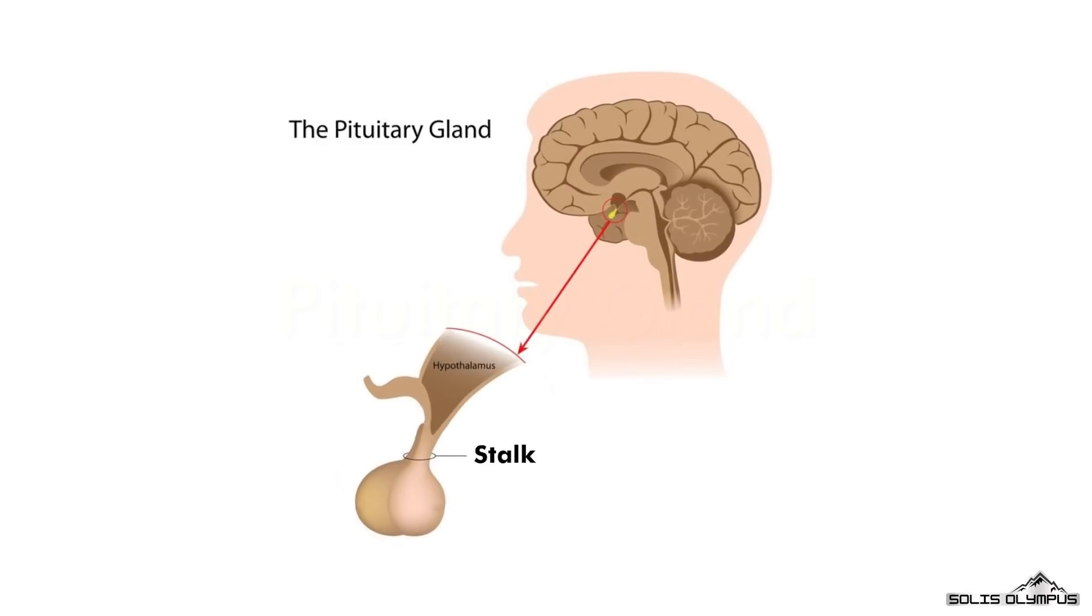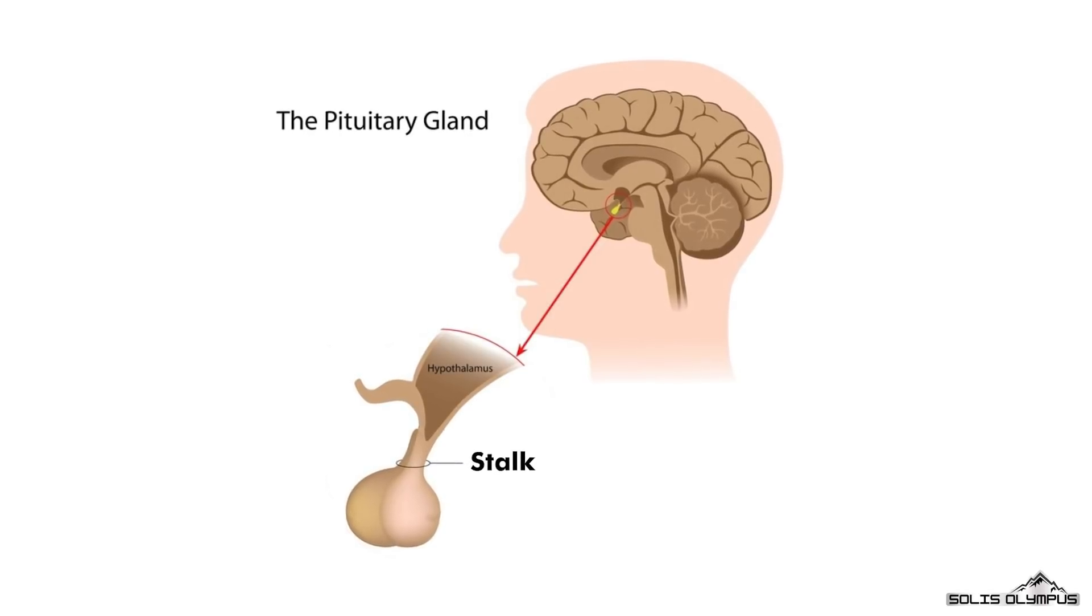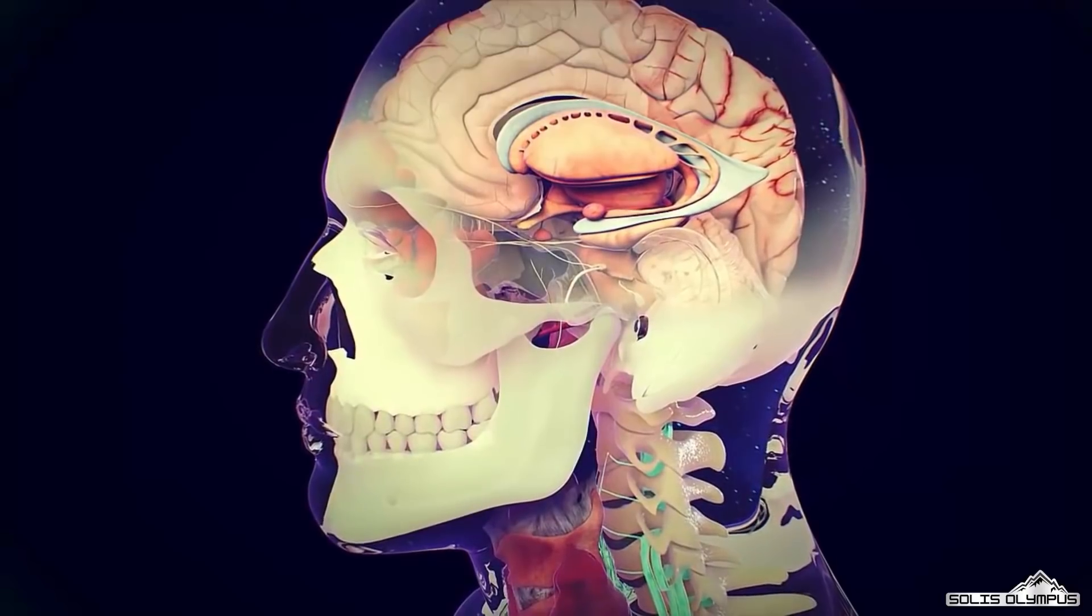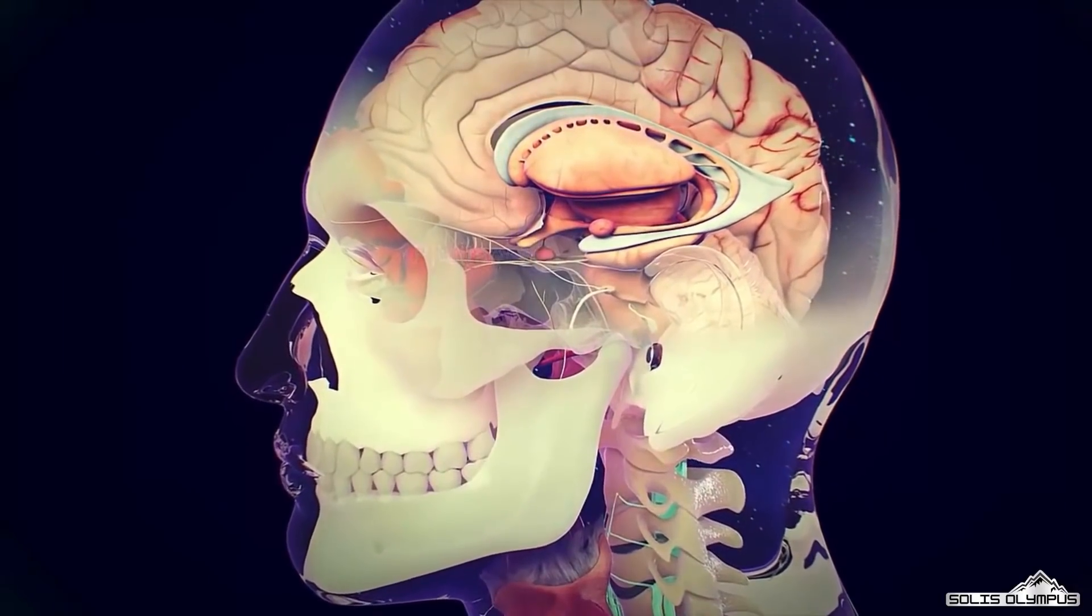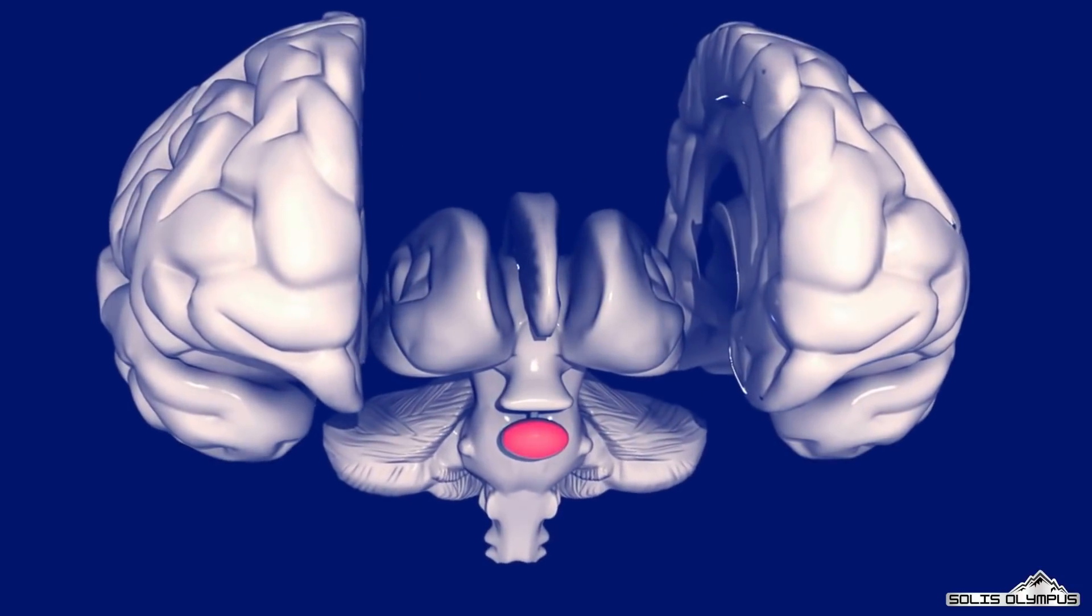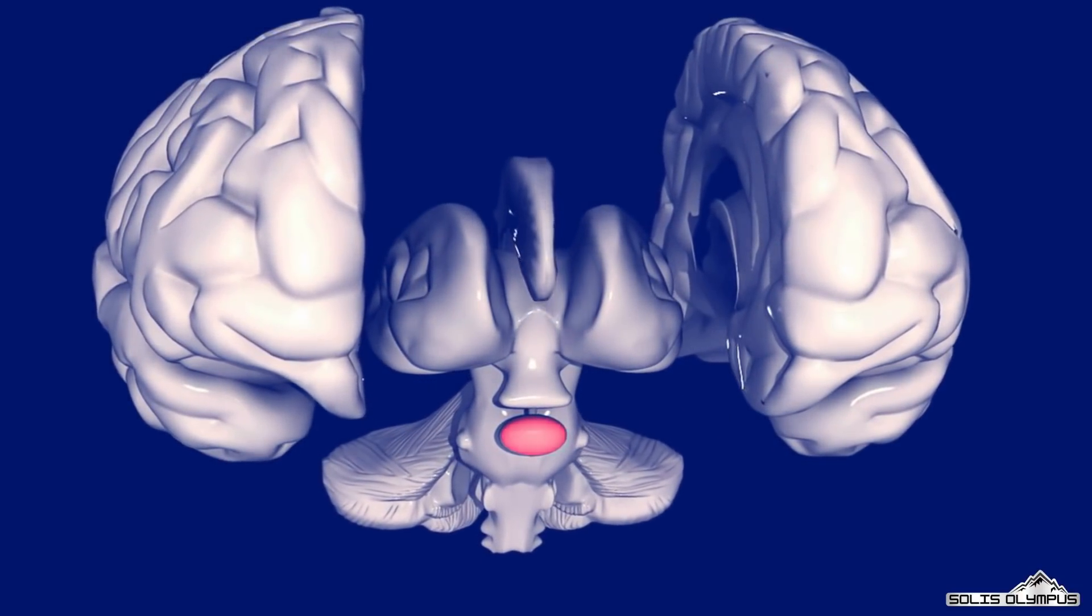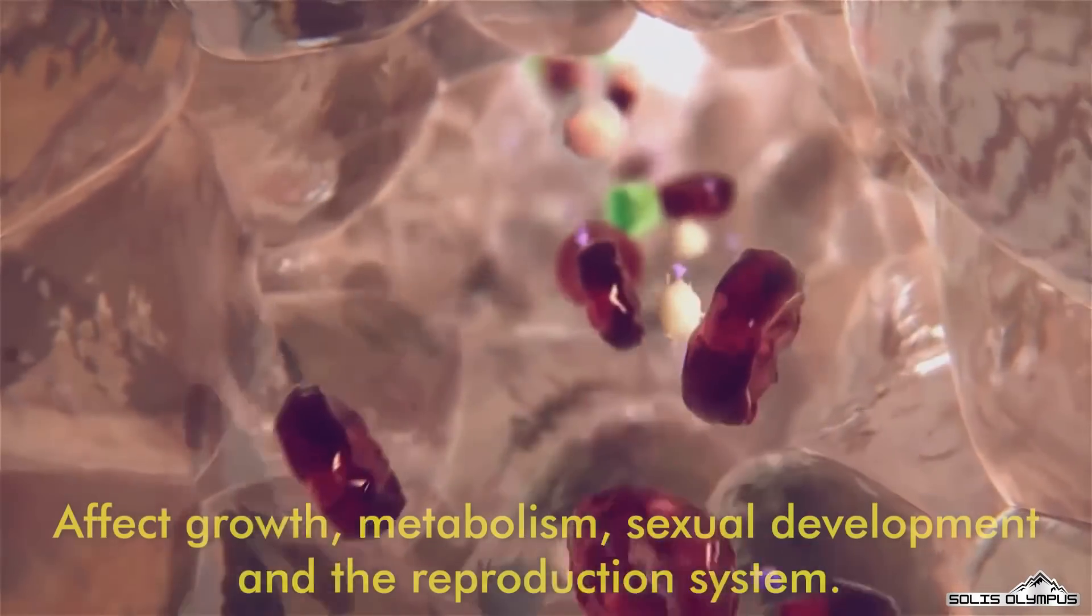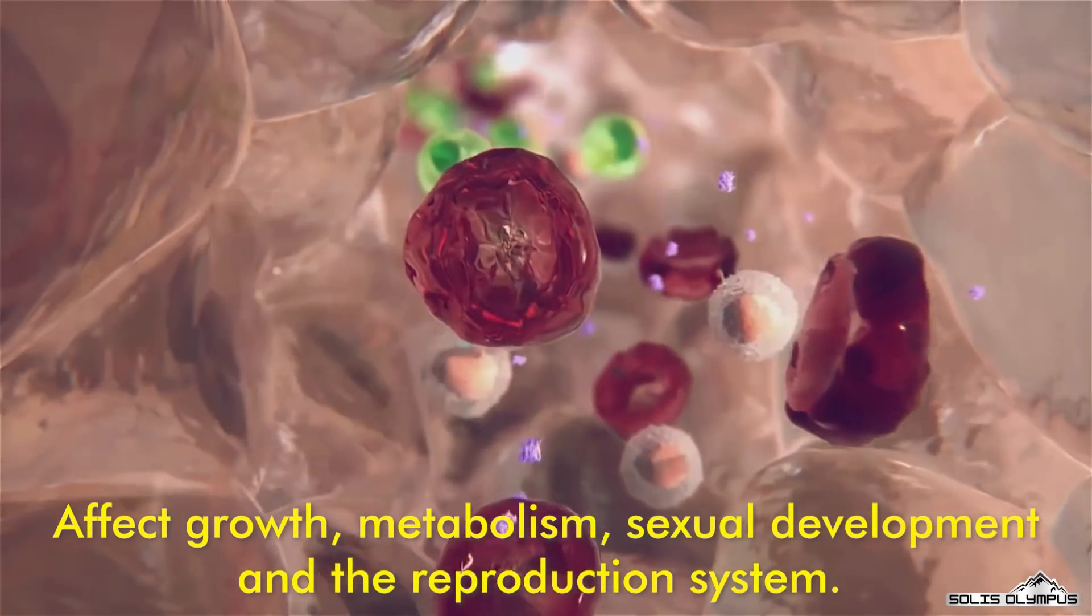Pituitary gland. The pituitary is a pea-sized gland connected to the hypothalamus of the brain by the pituitary stalk. It is located in the center of the skull, just behind the bridge of the nose. The primary role of the pituitary gland is an important link between the nervous system and the endocrine system. It releases many hormones which affect growth, metabolism, sexual development, and the reproduction system.